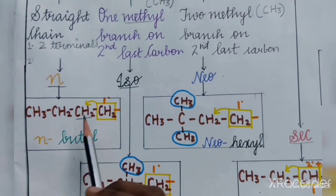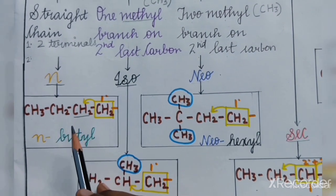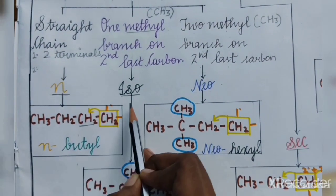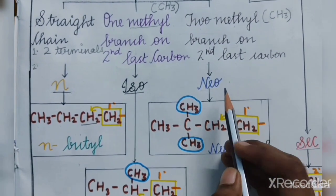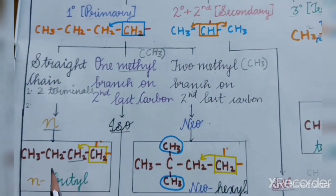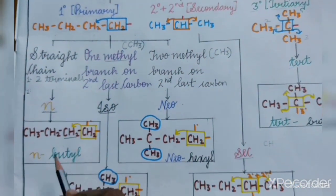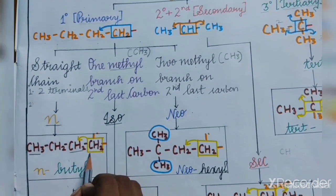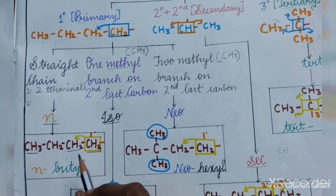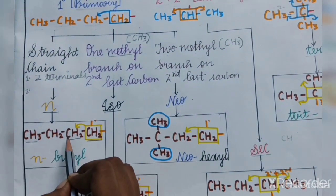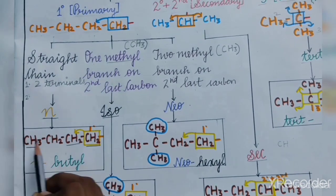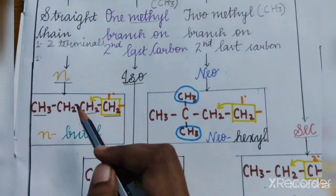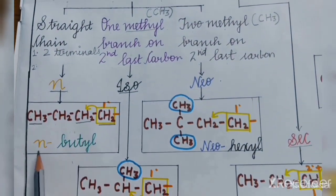Let's check whether it is a straight chain. For a straight chain, it should have two terminals — yes, it has two terminals, so the first condition is satisfied. And while counting the carbon numbers, we do not need to take any reverse — the second condition is also satisfied. Therefore it is a straight chain and the prefix used would be N. The name of this alkyl is N-butyl.